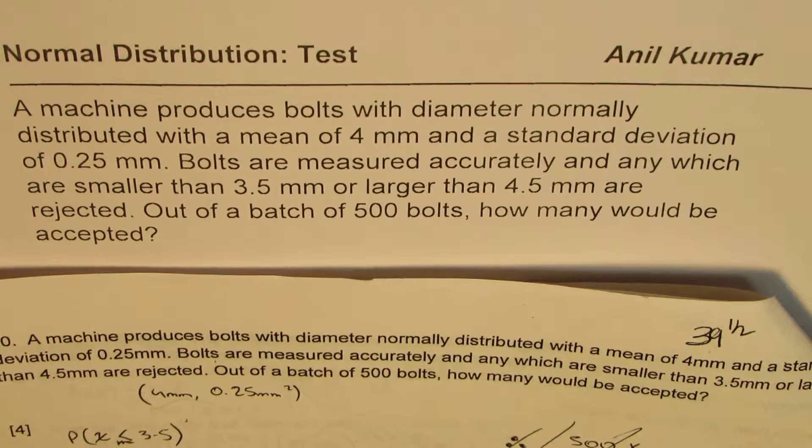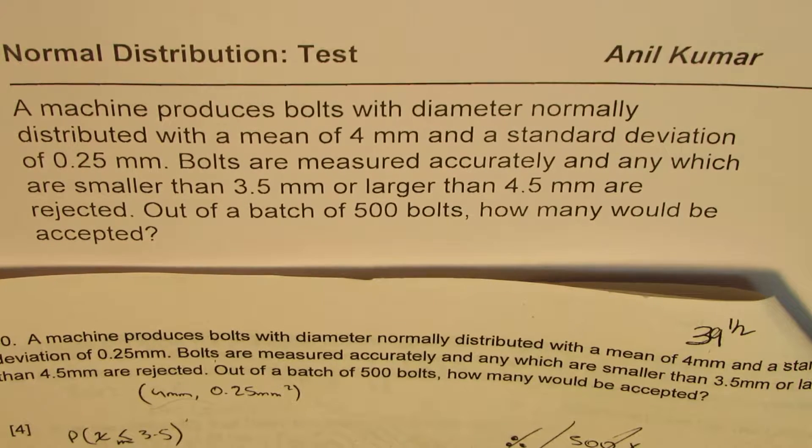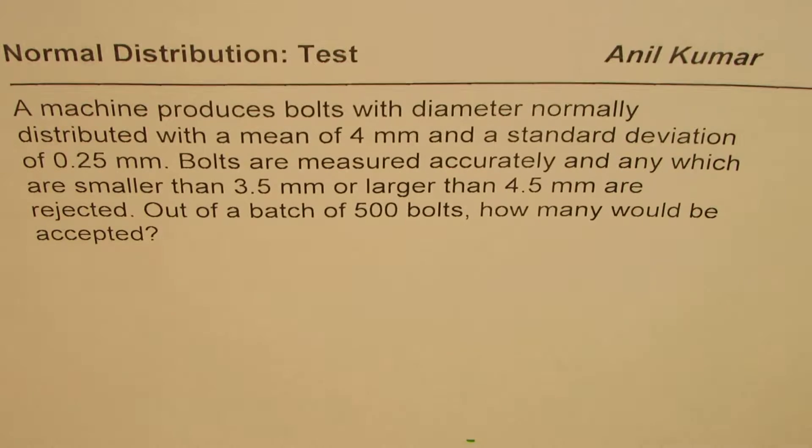I'm Anil Kumar sharing with you questions from previous test papers. This one is from IB senior level maths on normal distribution. The question here is: a machine produces bolts with diameter normally distributed with a mean of 4 millimeters.